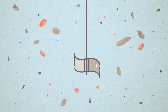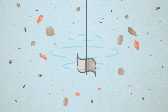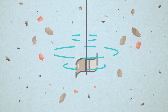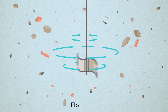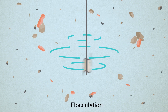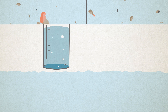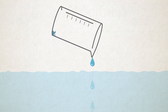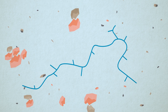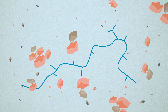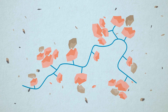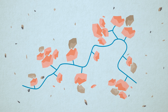We use a giant stirrer to mix the coagulant into the water quickly, which encourages the colloids to bump into each other and start to stick together. This rapid mixing is flocculation. To get the particles to become even bigger and stronger we add a polymer. The polymer grabs onto the group of colloids, clumping them together to form a floc. This floc can easily be trapped in our filters and removed from the water, reducing its turbidity.